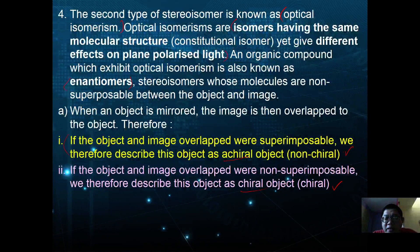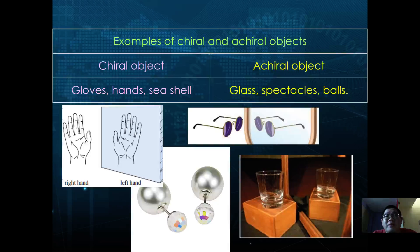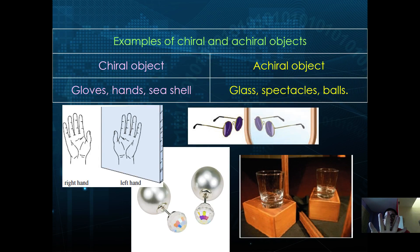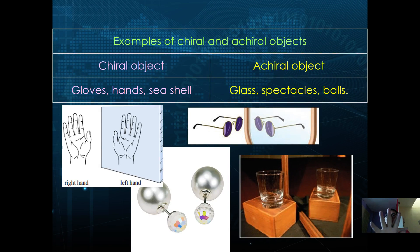Let's look at examples of chiral objects. Your right hand, when reflected, becomes your left hand. When you overlap them, the left and right hands are non-superimposable, so a hand is a chiral object. Other chiral objects include gloves and seashells.